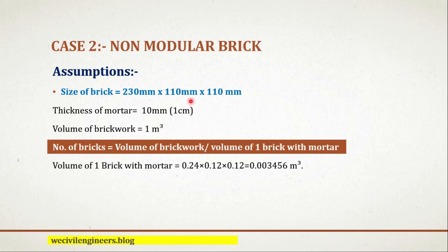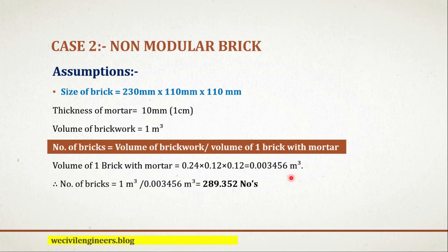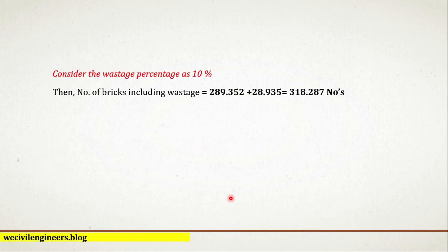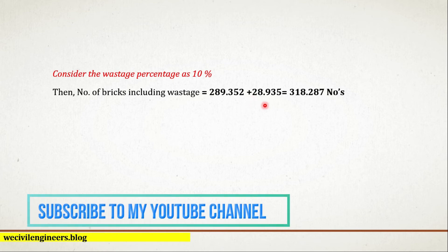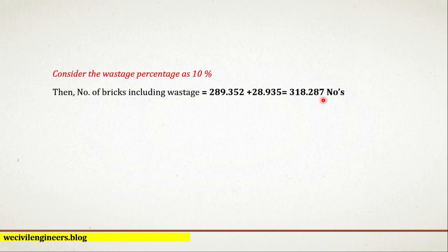Just add the thickness of mortar to the size of brick to get the nominal size of brick. The volume of one brick with mortar equals 0.24 multiplied by 0.12 multiplied by 0.12, which equals 0.003456 cubic meter. Substituting into the formula gives 289.352 numbers. Considering a wastage percentage of 10%, the number of bricks including wastage equals 289.352 plus 28.935, which equals 318.287 numbers.